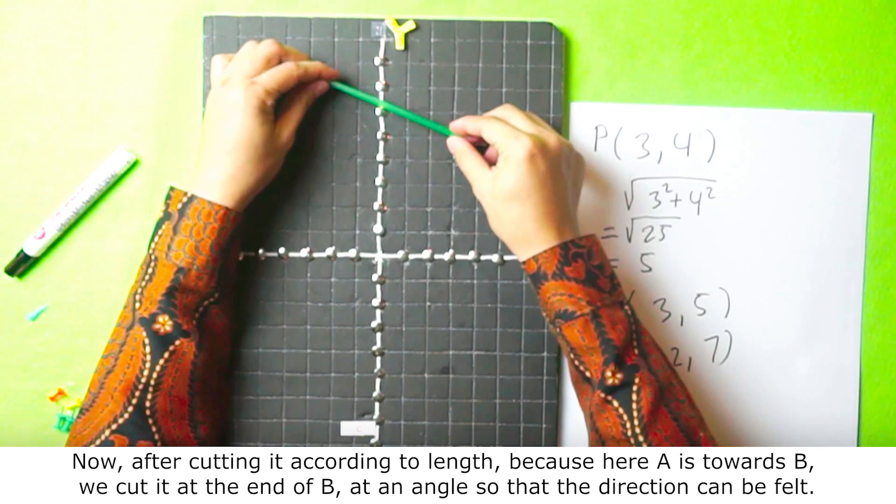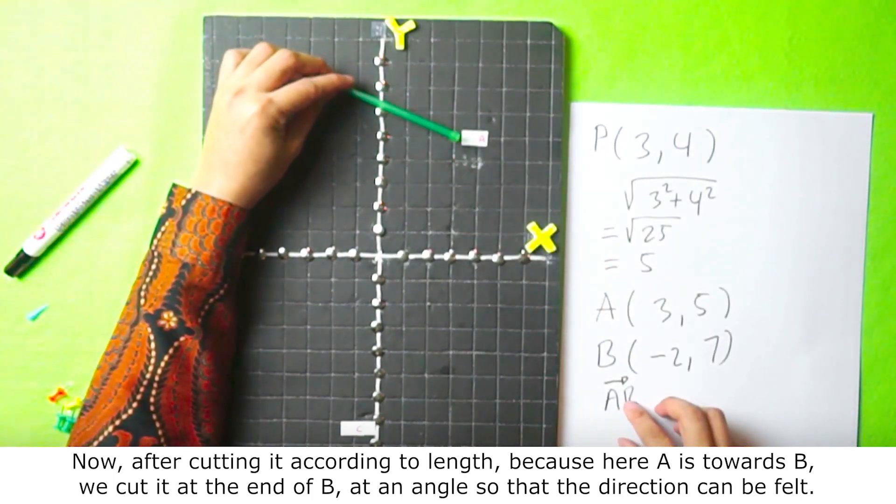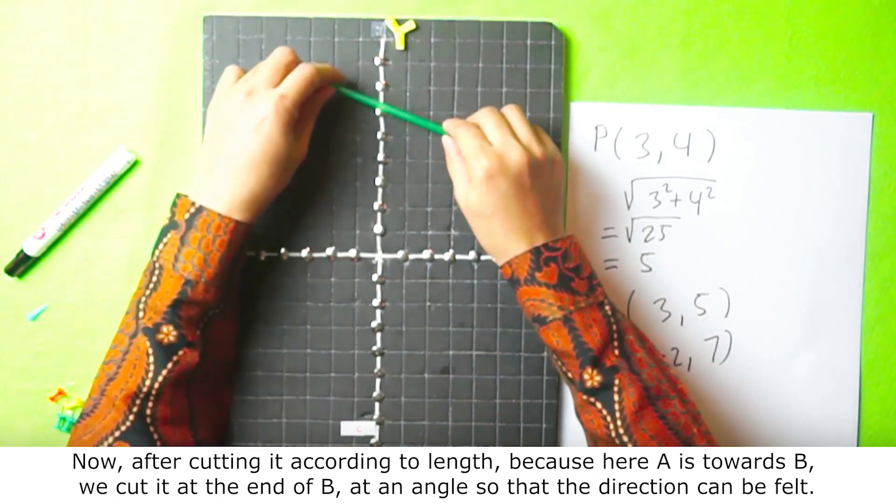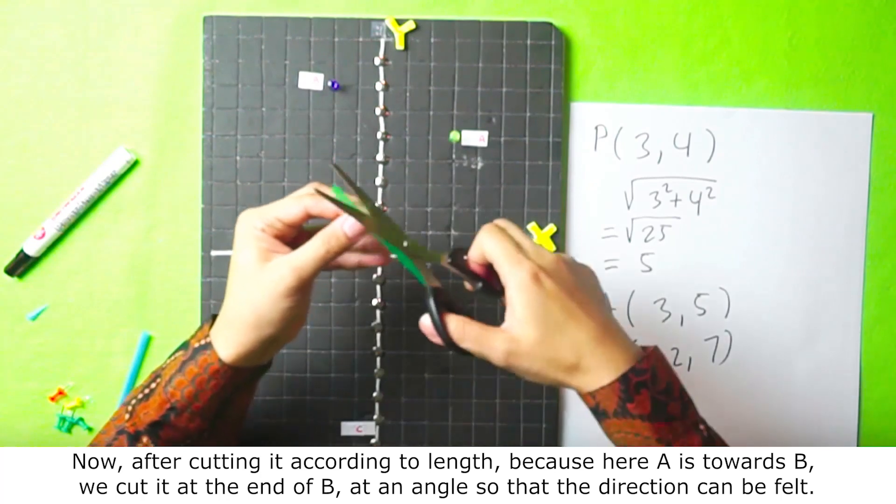Now, after cutting it according to the length, because here A is towards B, we cut it at the end of B at an angle so that the direction can be felt.